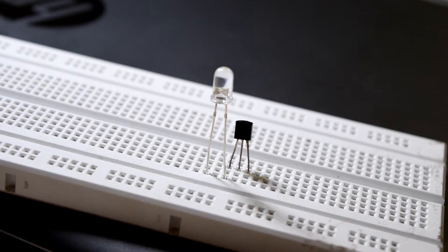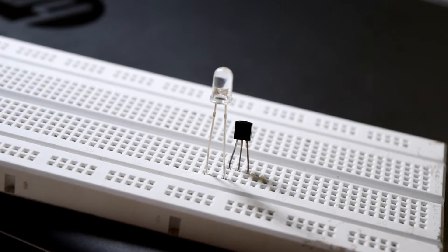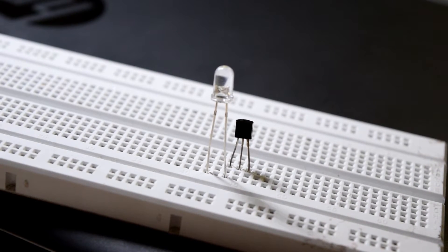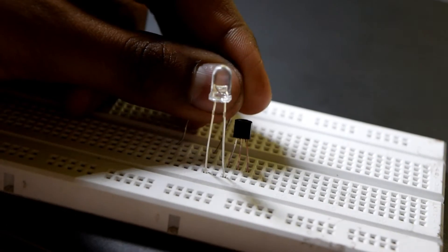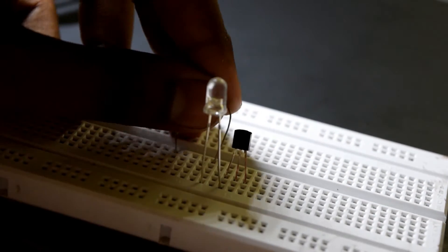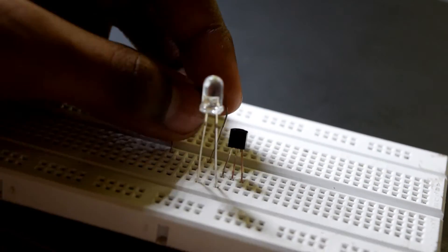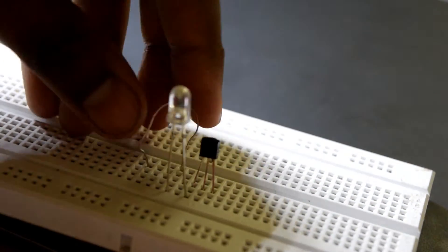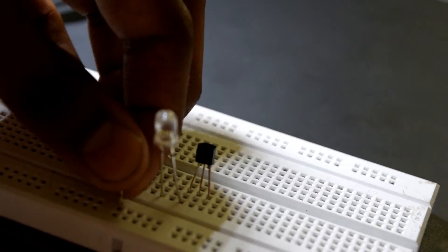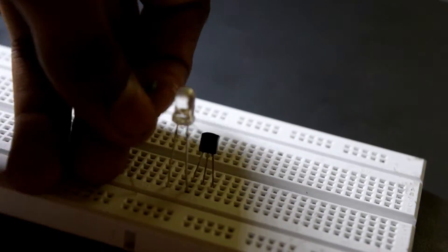Now take your 150 ohms resistor or 470 like that and connect its one terminal to the positive terminal of the LED and the other to the positive rail.